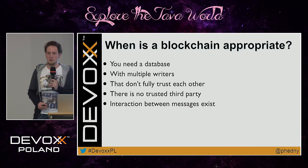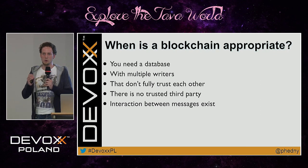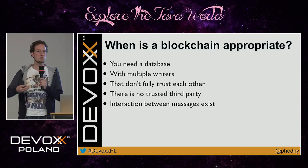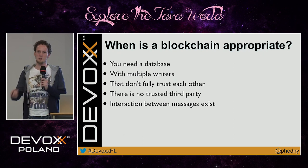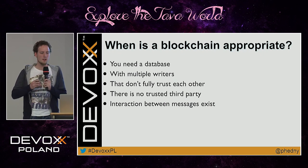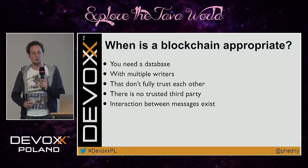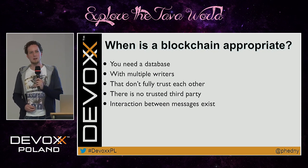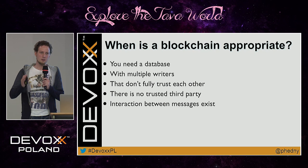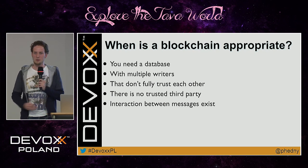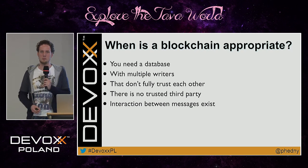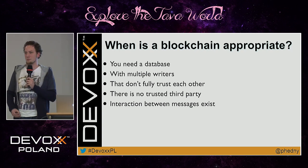So the five core criteria: you need a data store with multiple writers that do not fully trust each other — not full distrust, but not full trust either — you do not have or want a trusted third party, and there is some level of interaction between messages. If all these apply, give me a call — I'm really interested in exploring whether blockchain is still appropriate, and if yes, starting a project.